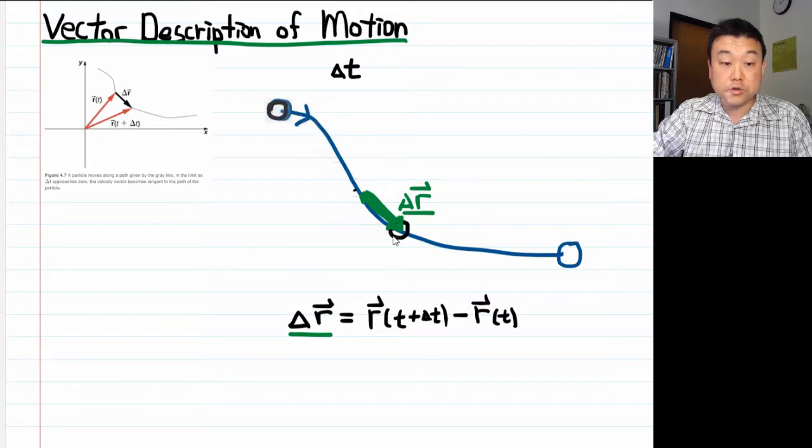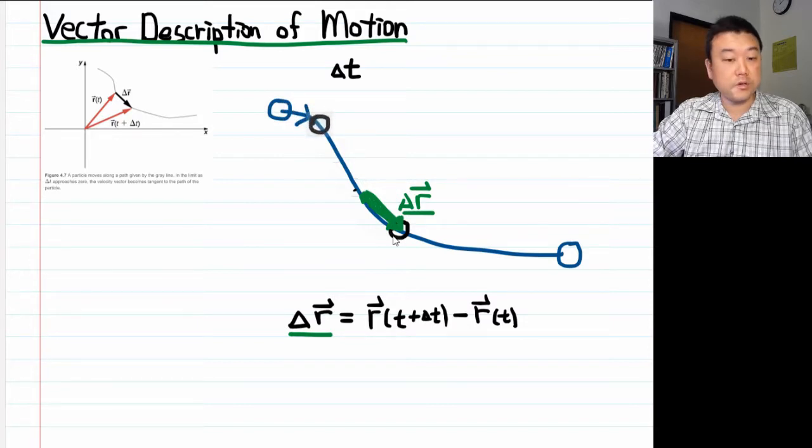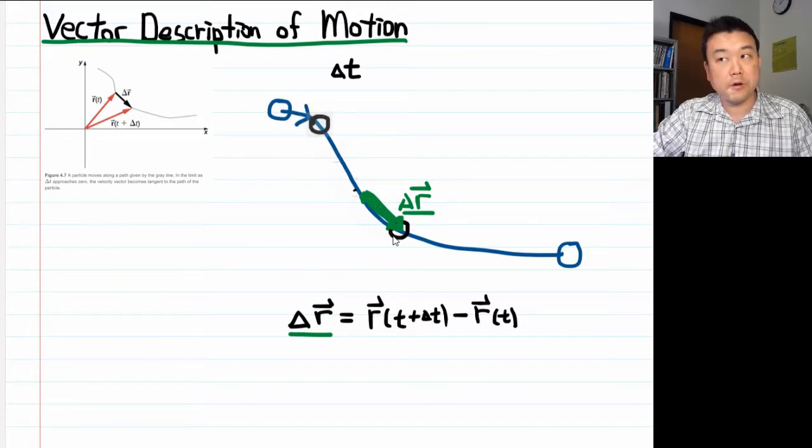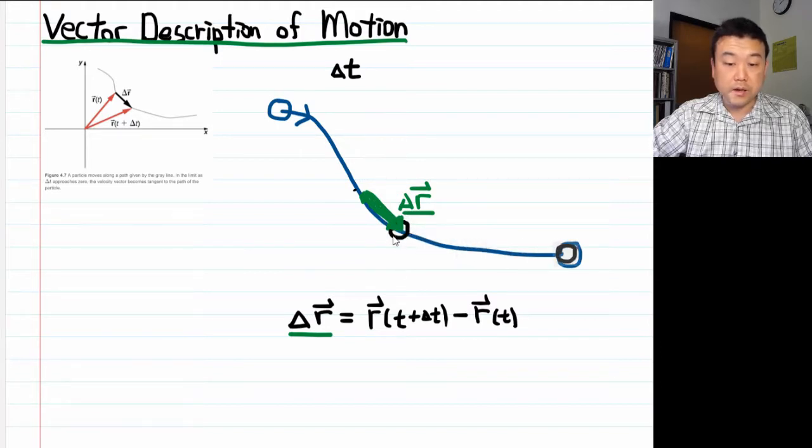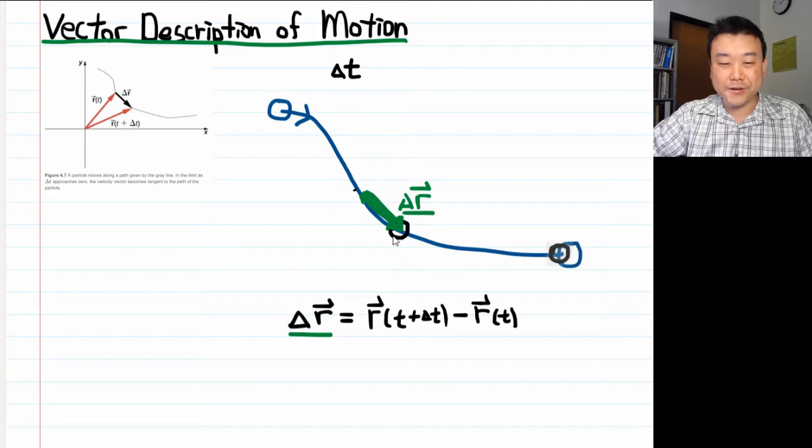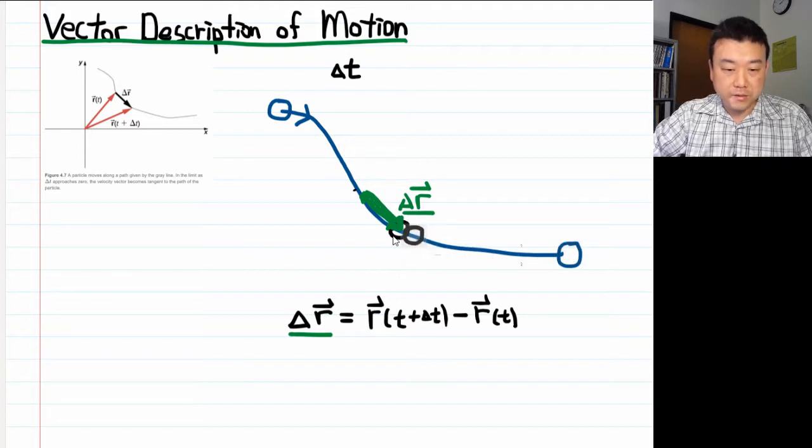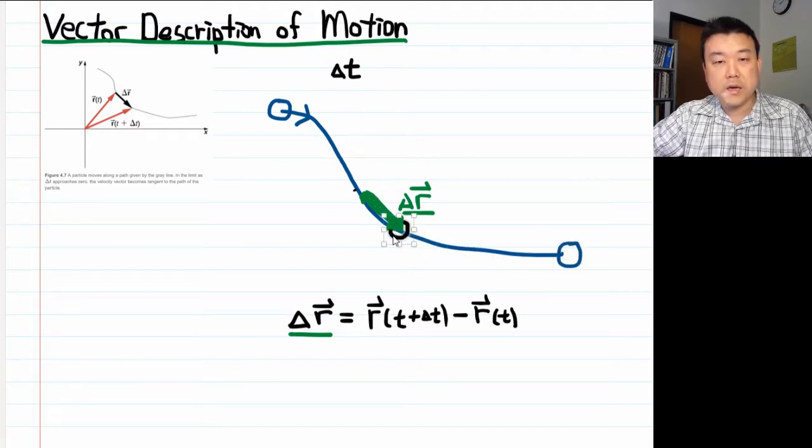Then as you imagine this particle moving, this is basically what you could do. You could look at in time delta t, how far does it move? That's your delta r. In time, another time delta t, how far does it move? That's another delta r, delta r, delta r, and so on. You can do that for the entire trajectory. I won't draw it for the entire trajectory. Let me just draw it at a few points and use that to show how that's used to describe motion.